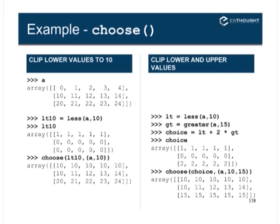What would happen if I use this mask array as my choice array? These become indexes: 0 and 1 are my indexes into A and into 10. Anywhere there's a 0, we choose a value out of A. Anywhere there's a 1, we just choose 10. Look what happens: anywhere where we were less than 10, the values become 10; anywhere where we're not less than 10, we just get our old values.